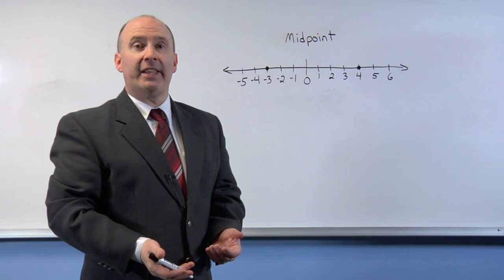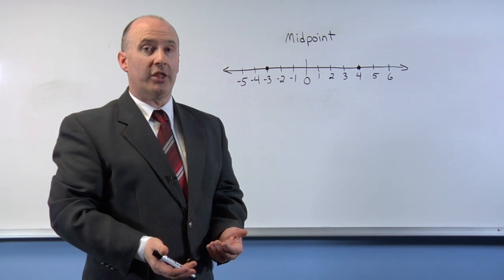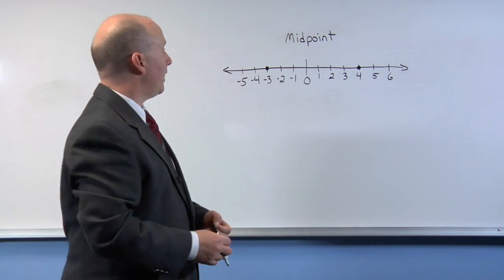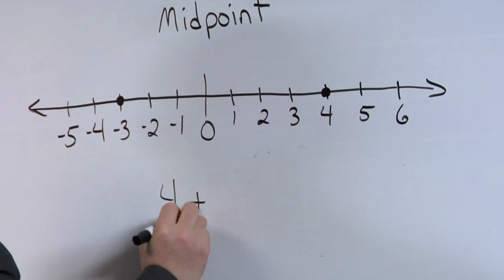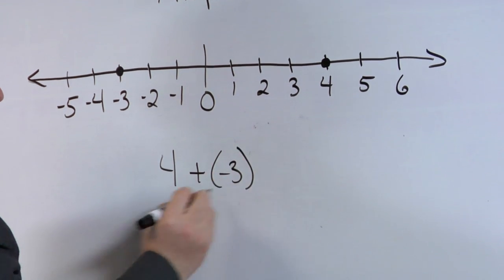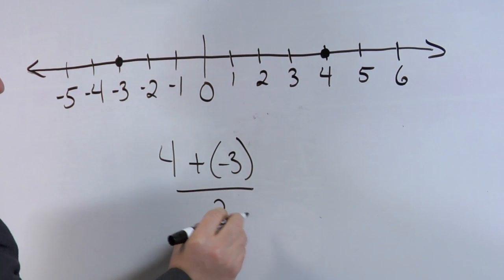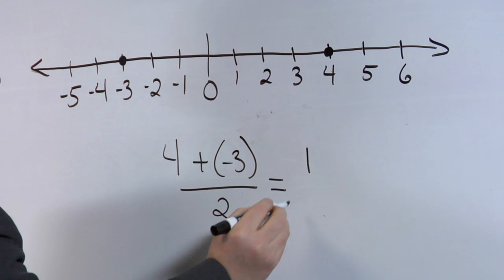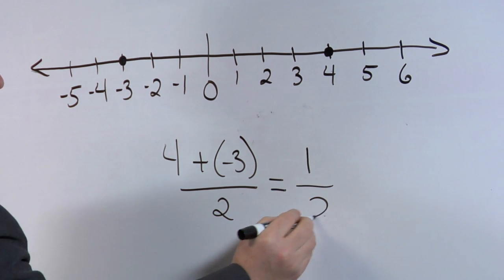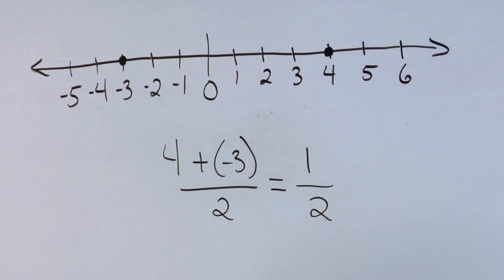The second method is to find the average of the two points on the number line. In this case, we would find the average by taking 4 plus negative 3 and dividing by 2. 4 plus negative 3 is positive 1 and then divided by 2 is one half.